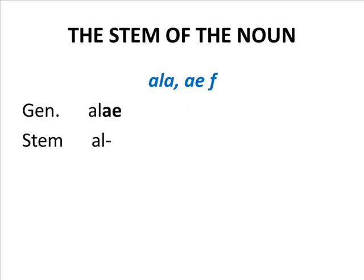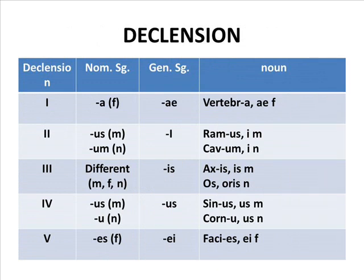The stem of the noun is essential for declining and word-building. It is determined by removing the genitive ending which indicates the type of declension. Nouns with the ending -ae in the genitive singular belong to the first declension and are feminine. Nouns having the ending -i in the genitive singular belong to the second declension. Nouns of the masculine gender have the ending -us in the nominative.